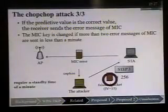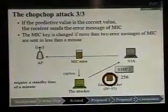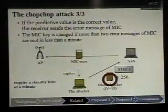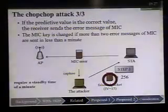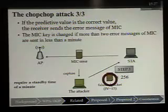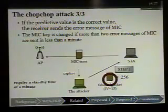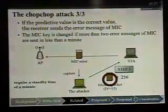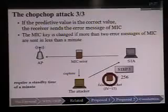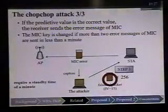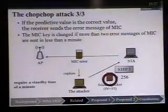But if the predicted value is correct, the receiver sends an error message or MIC failure. The attacker can then determine the correct plaintext value by observing the error message or MIC failure. However, the MIC key is changed if more than 2 MIC error messages are sent within one minute. Therefore, the Beck-Tews attack requires a standby time of over one minute after each byte is restored.